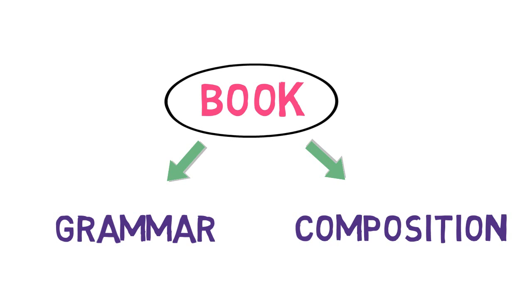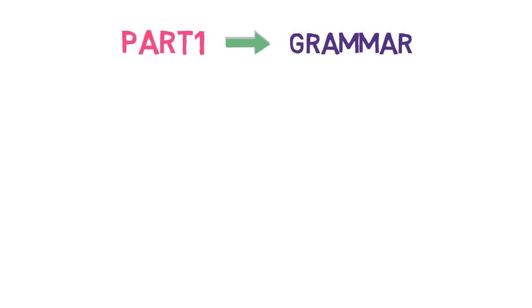Part 1 of the book is dedicated to English grammar. Various topics related to grammar are covered. It mainly includes parts of speech in detail, including noun, pronoun, verb, adverb, adjective, preposition, conjunction, and interjection.